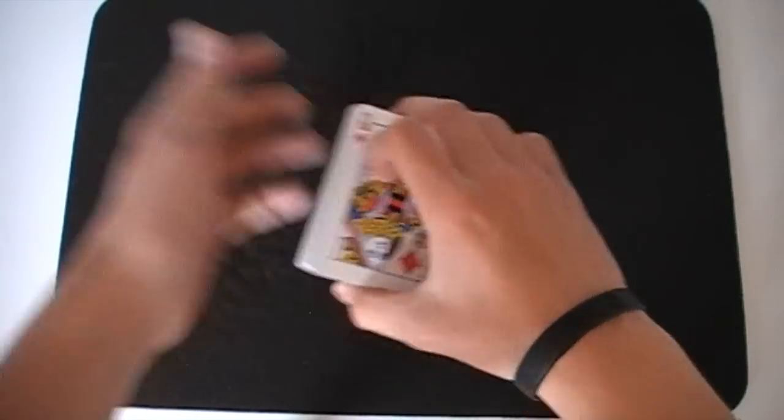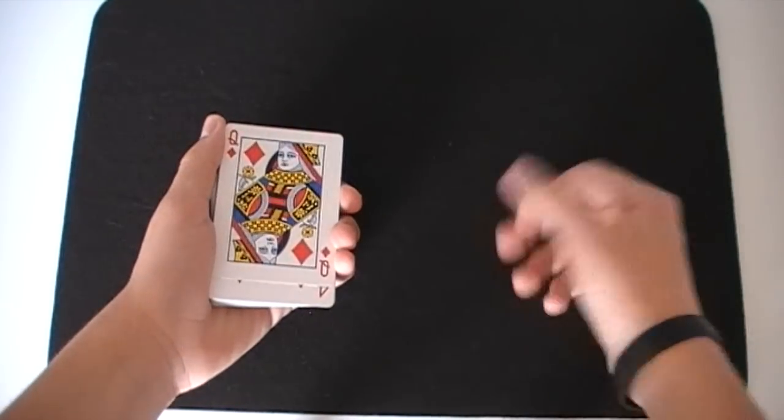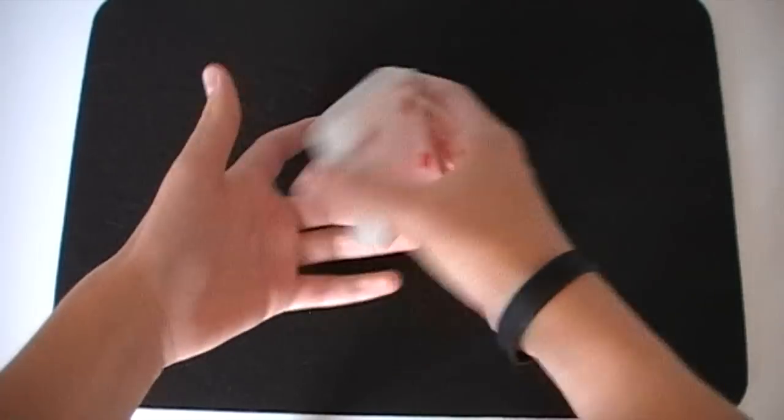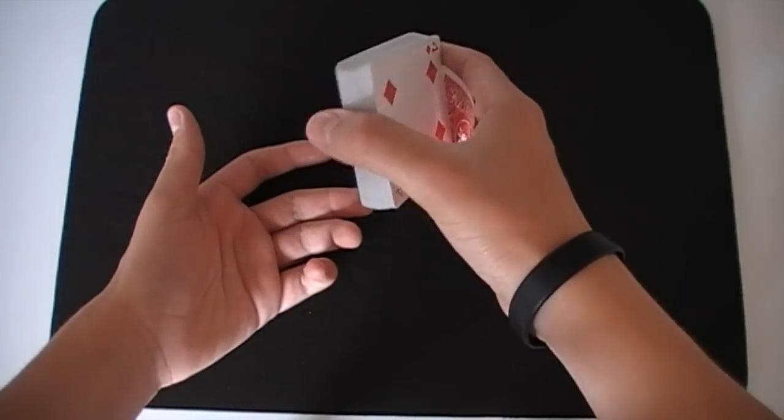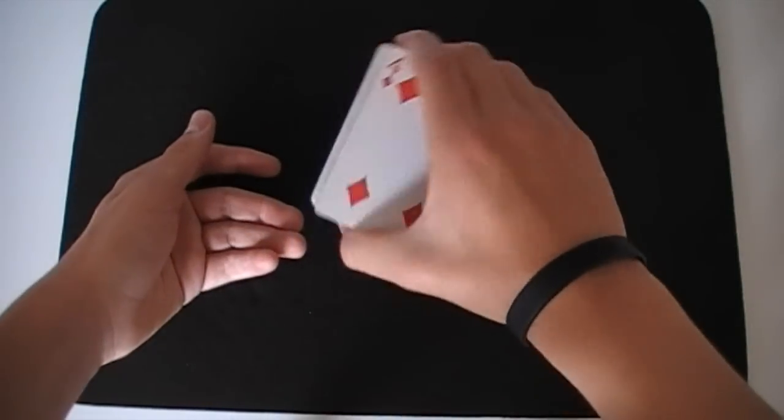So the ironic thing about this color change is that even though it's called the No Palm change, it actually involves palming. In fact the very first thing you do is palm a card. So when I start the color change I already have a palm card in my hand and I'm holding the deck as well.